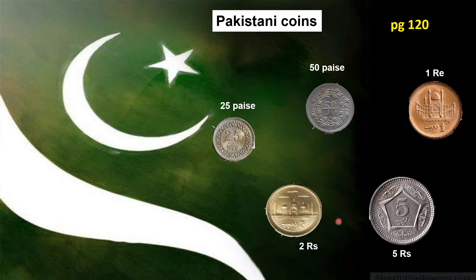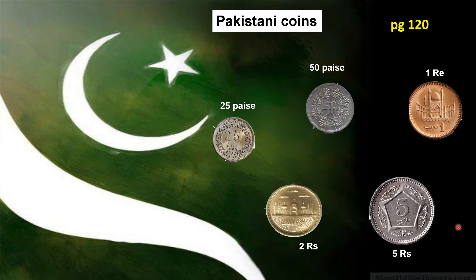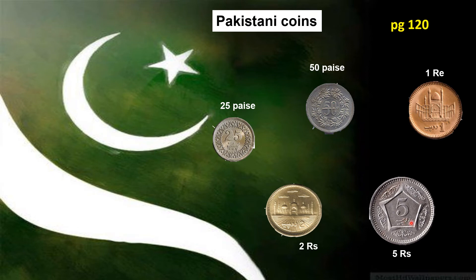Next, we have a two rupees coin. It has a motif with three parts. We write the short form RS. Two rupees — it is green in color. Next, we have a five rupees coin. It is slightly different in shape. We write five rupees RS.